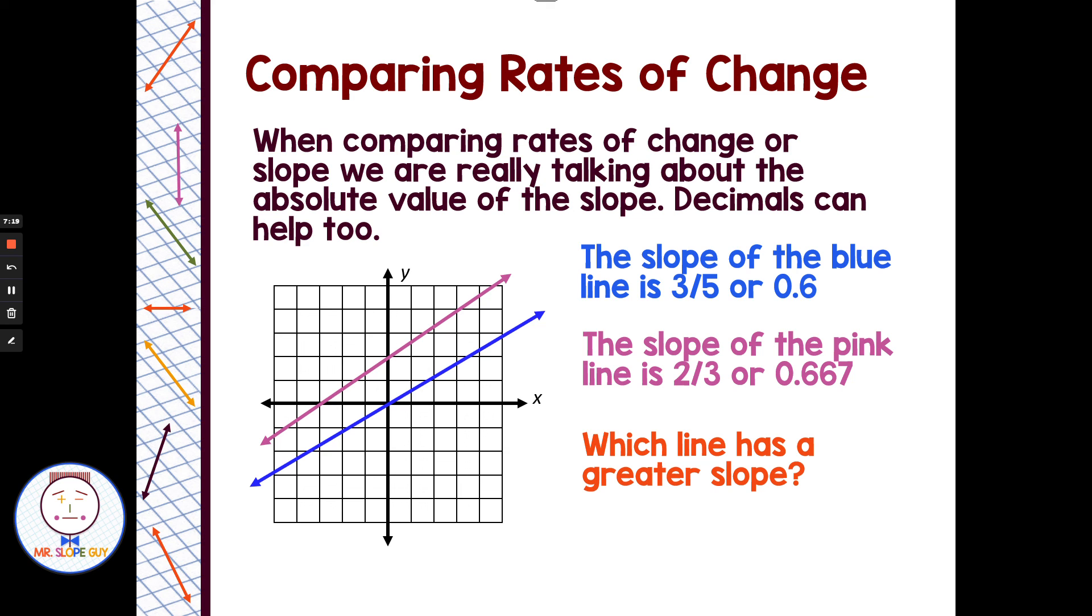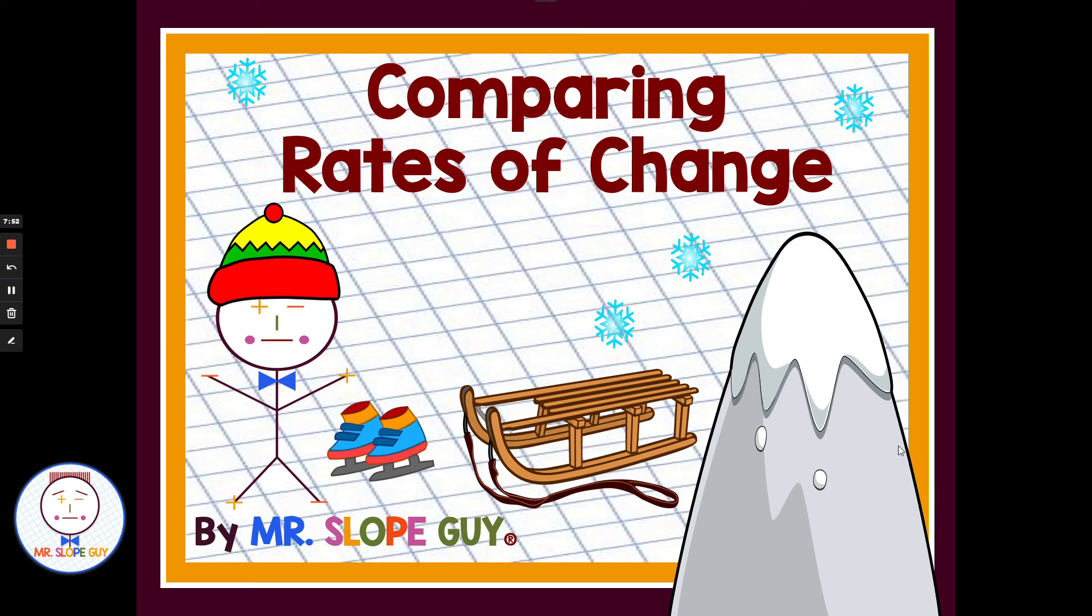So which line has the greater slope? The pink line does. The absolute value of 2 thirds is greater than the absolute value of 3 fifths. That's a way of measuring your steepness. With absolute value, we could still have a negative slope, but we're looking at absolute value, it could be a steeper line. Absolute value and decimal is helpful with our comparisons for rates of change or slope. I hope that helps you guys completing your work and understanding comparing rates of change. Have a great day.